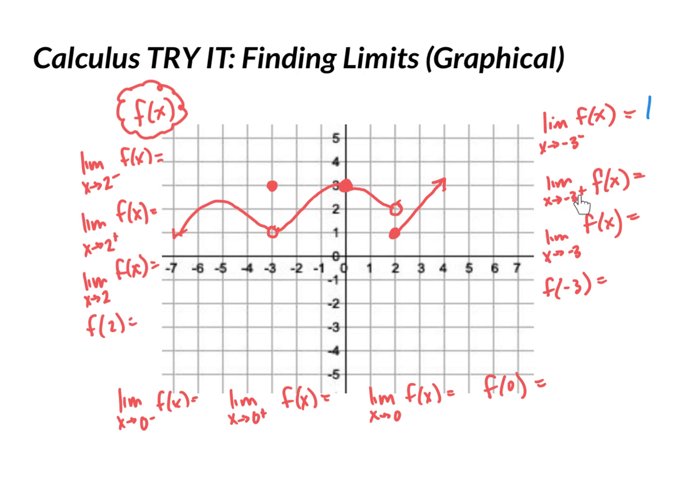Now, from the positive side, so coming from this direction, what's the function doing? It's also approaching a y value of 1, and because those limits are the same, the limit exists there. It is 1. That is the limit at negative 3, because it's approaching that y value from both directions.